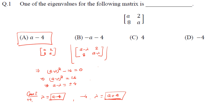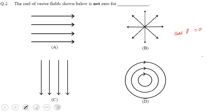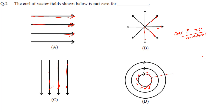Next question: the curl of a vector field shown below is not zero. We know that if the curl of some vector F is zero, it means the field is irrotational — the vector is not rotating. In the first cases shown, vectors are straight lines, also in the second. But in the third case, the direction of the vector is always changing, which means it is rotational.